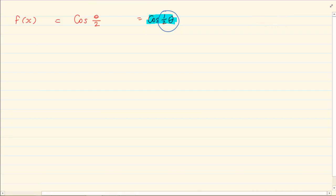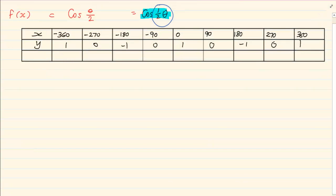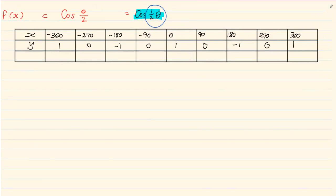So let's draw the graph cos(θ/2). If you look at the table, the table is your standard cos graph. You should know this from your grade 10 work. Now what is our adjustment? Our adjustment is half. It is timesing by theta. So what am I going to do? I am going to divide by half.